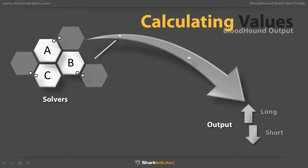There are many solvers included with Bloodhound. Solvers are basic building blocks that analyze aspects of your chart or indicator. They also make evaluations in both directions, producing a number somewhere between 0 and 1 for the long and short side.